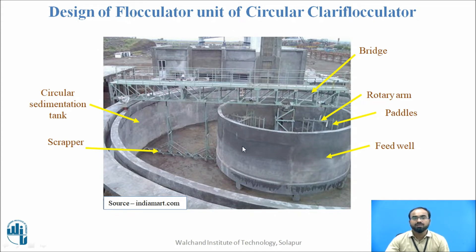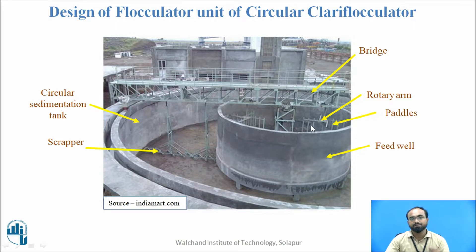This is a clearer picture where you can see the flocculator with paddles provided. These are the rotary arms which make the paddles rotate. The outer part is your clarifier where you can see the scrapers are provided.